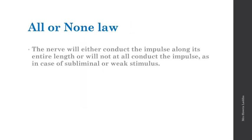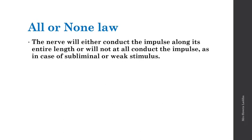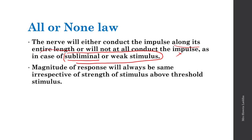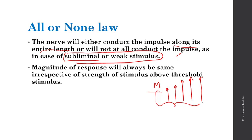All or none law: the nerve will either conduct the impulse along its entire length or will not conduct at all — as in the case of a subliminal or weak stimulus. If the stimulus is weak or subliminal, there will be no conduction of the impulse. But if there is a threshold stimulus or a stimulus above threshold, the nerve impulse is conducted along the entire length of the nerve fiber. The magnitude of the response will always be the same irrespective of the strength above threshold.